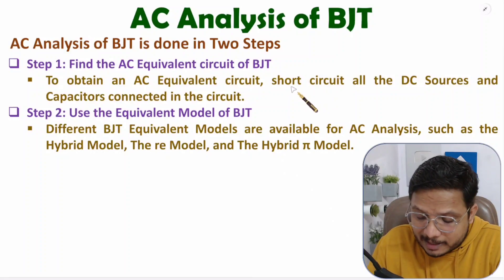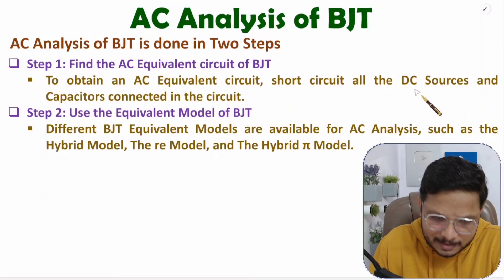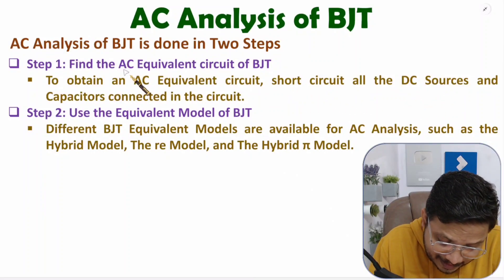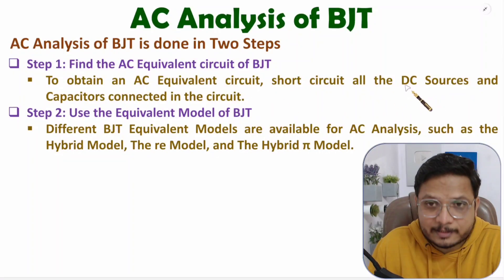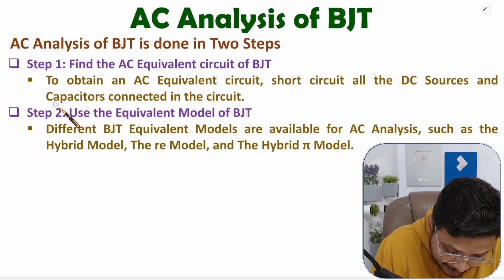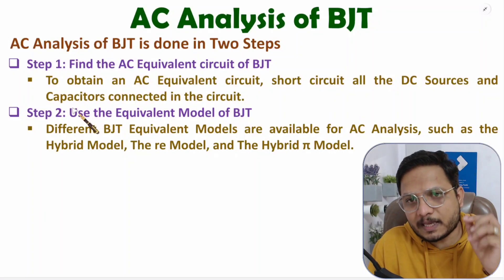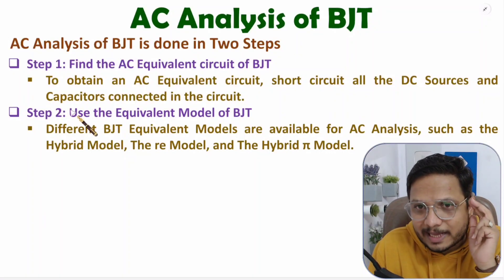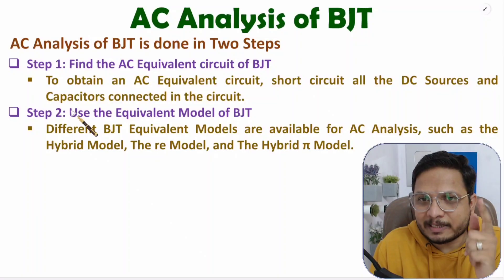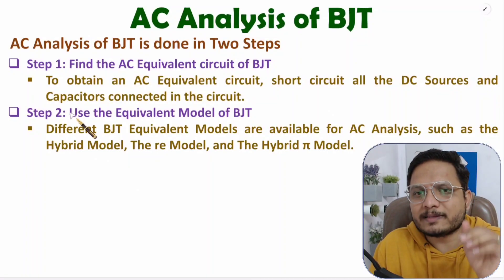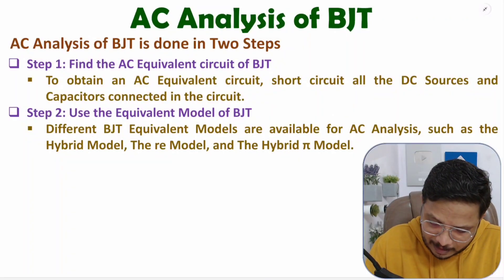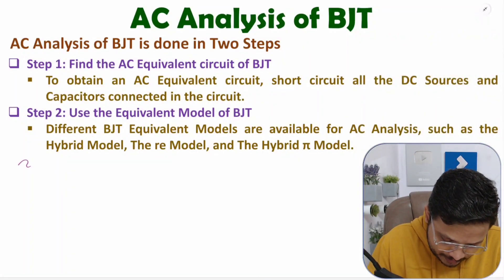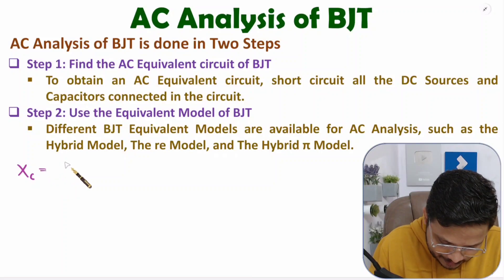For AC analysis, we need to short circuit all the DC sources — that is quite understandable. But why should we short circuit capacitors? With an AC signal, the capacitor's impedance Xc is very low — you can say it is a short circuit. The impedance of a capacitor is Xc = 1 / (2πFC).